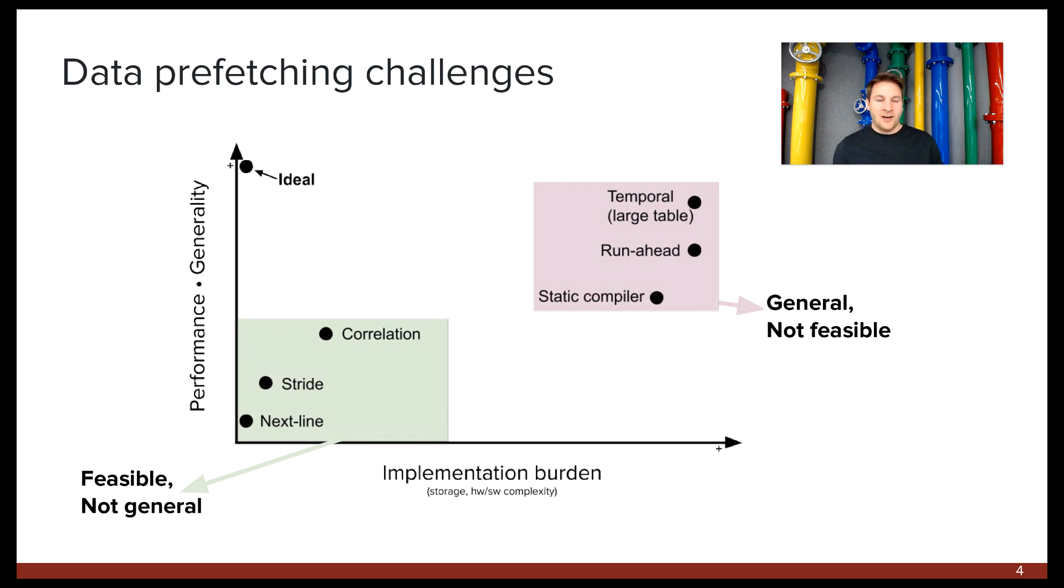On the right side, in the red area, we have prefetchers that memorize and replay the access stream, or which pre-compute the access stream using an additional hardware thread or processor. These prefetchers are extremely expensive in terms of storage and complexity, and so they're typically not found in real devices. Prefetching becomes increasingly difficult as we try and capture more and more complex patterns. And one thing that all of these designs have in common is that they don't actually understand the underlying program behavior.